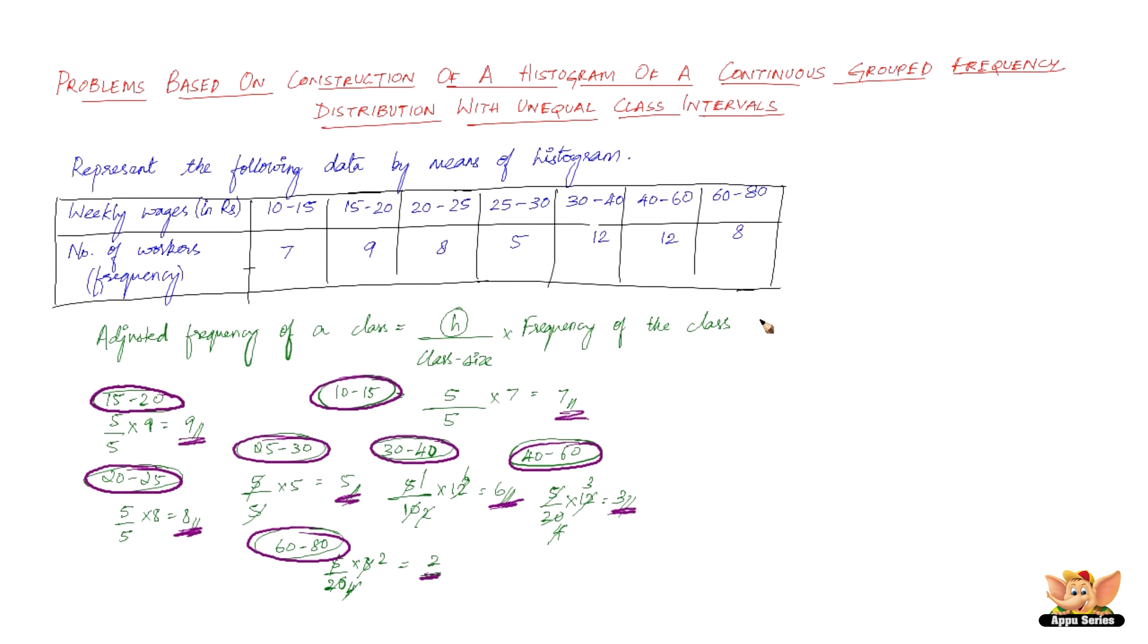So here we have the histogram. The usual procedure to draw the histogram is have two mutually perpendicular lines, one horizontal and one vertical. One being x-axis and another being y-axis. OX being x-axis and OY being y-axis. So OX is going to have weekly wages. The x-axis is going to have the weekly wages and the y-axis is going to have number of workers.